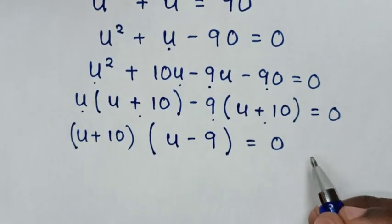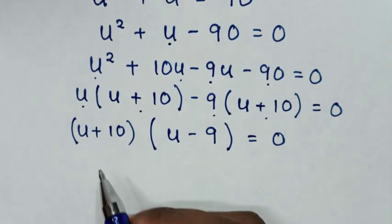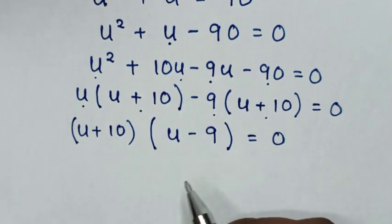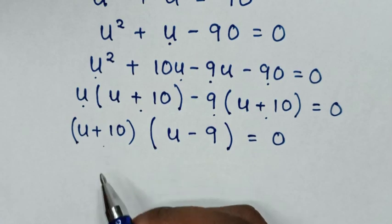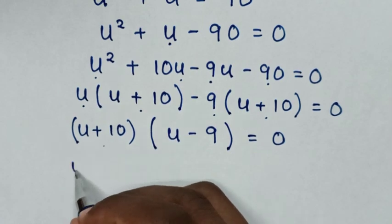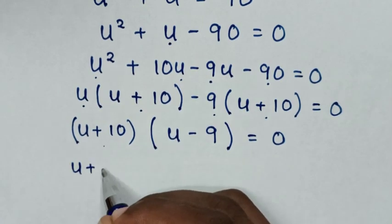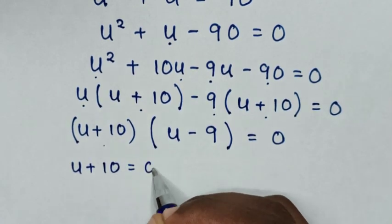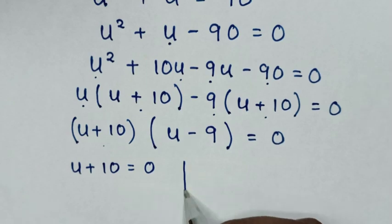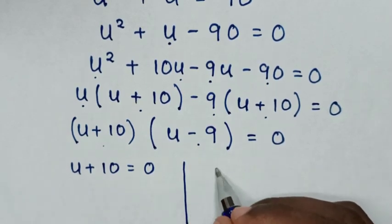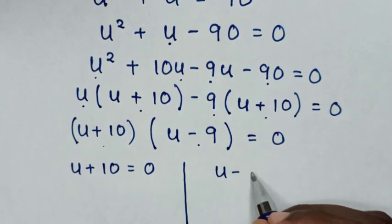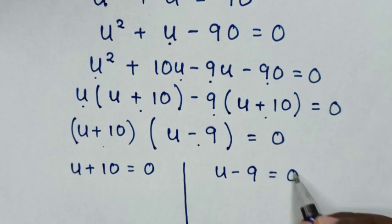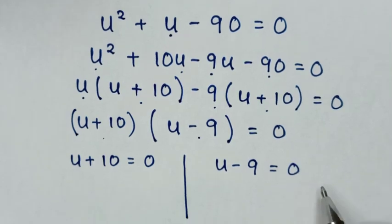From this equation we have two solutions. From the first solution, u plus 10 is equal to 0, and from the second solution, u minus 9 is equal to 0.